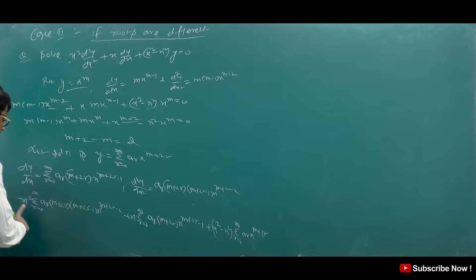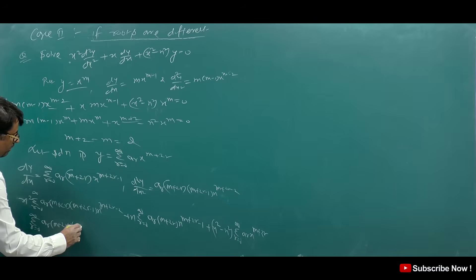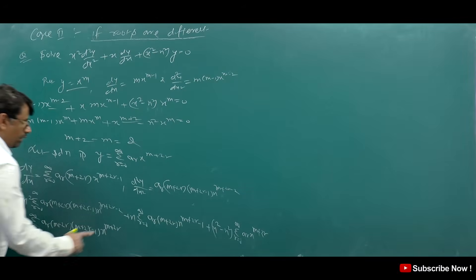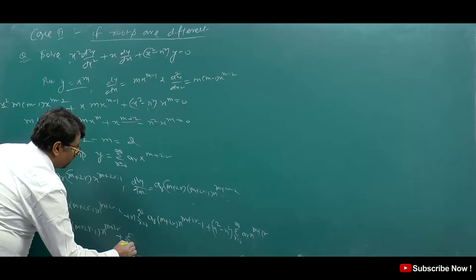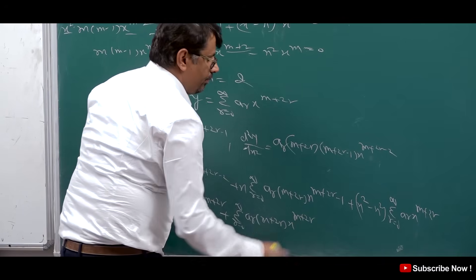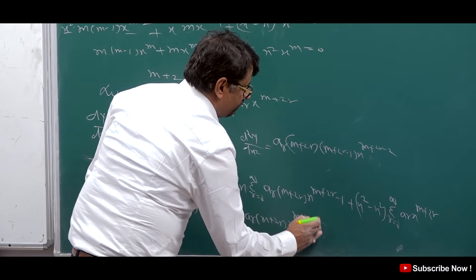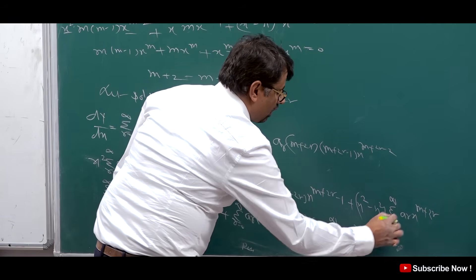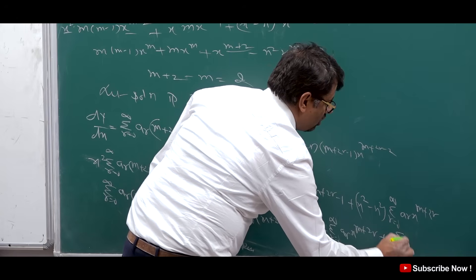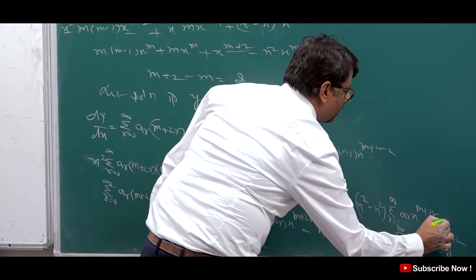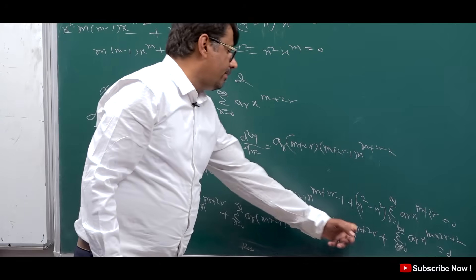After multiplying x² and x through, this becomes: Σ aᵣ(m+2r)(m+2r−1)·x^(m+2r) + Σ aᵣ(m+2r)·x^(m+2r) − n²·Σ aᵣ·x^(m+2r) + Σ aᵣ·x^(m+2r+2) = 0. Now we take (m+2r) common from the first two terms and combine them.